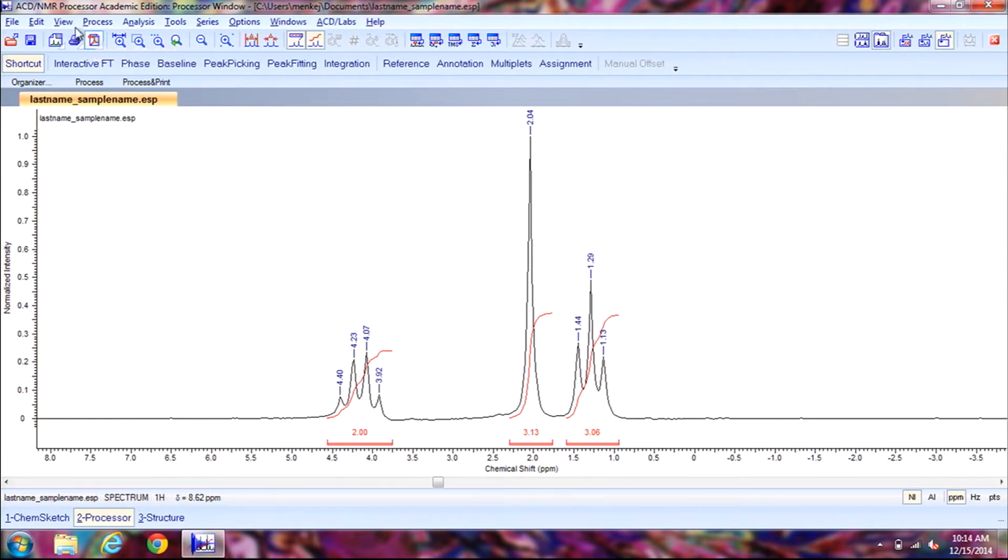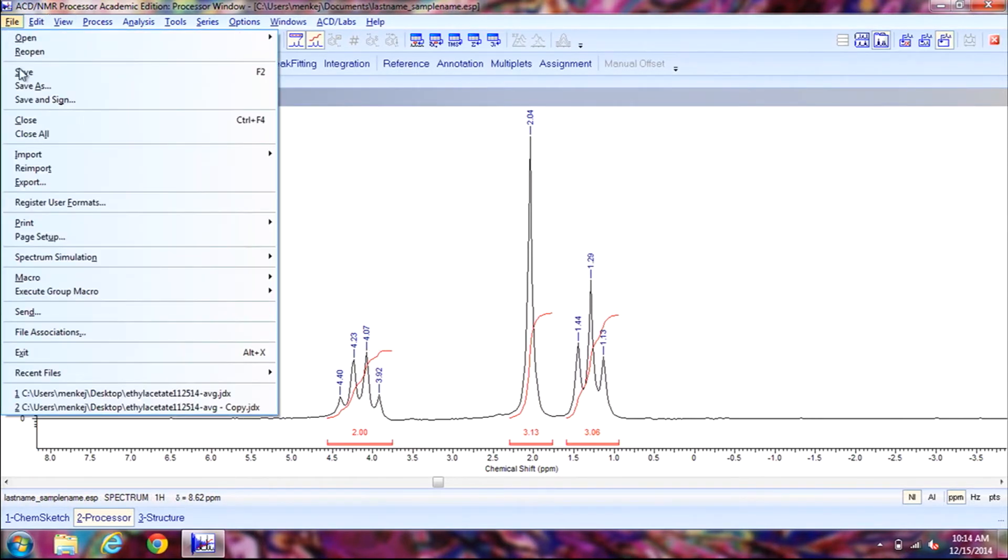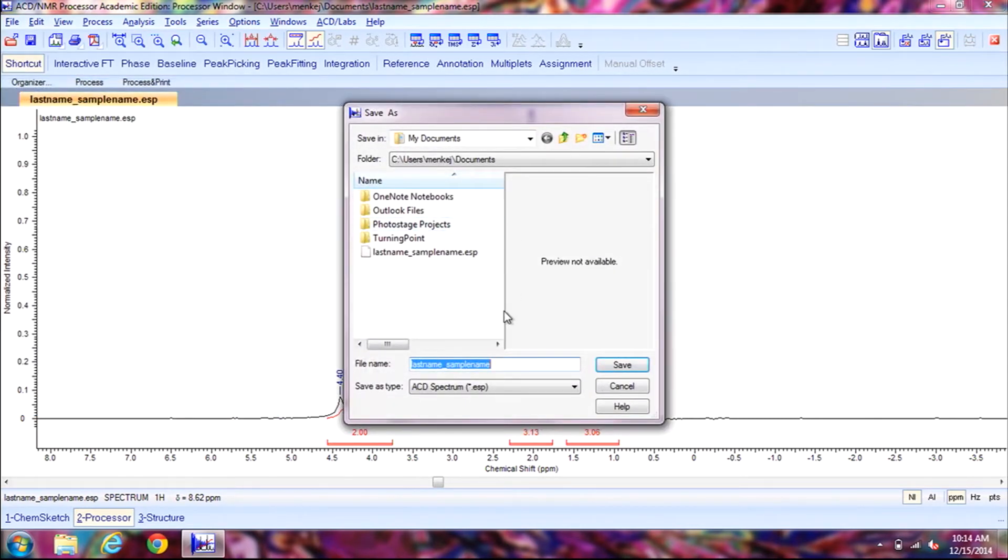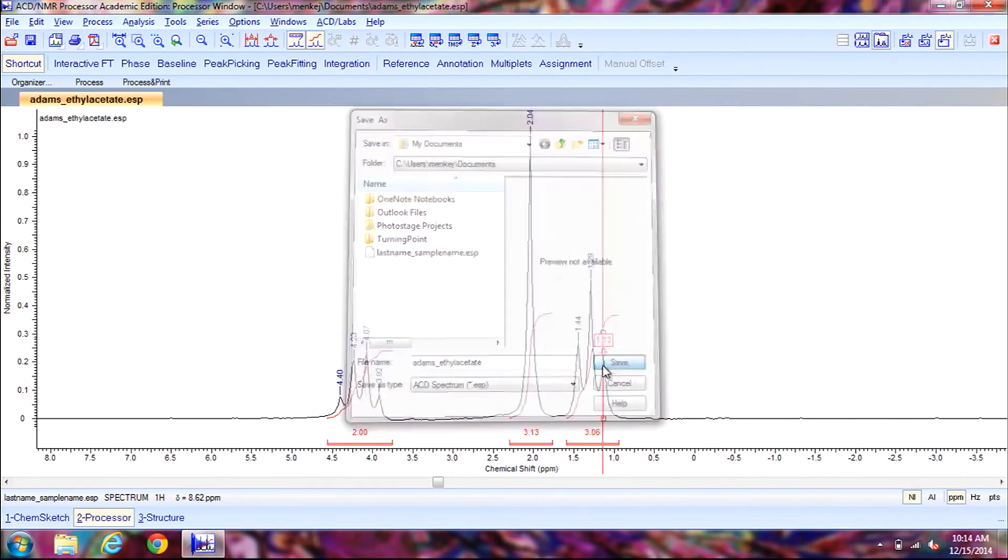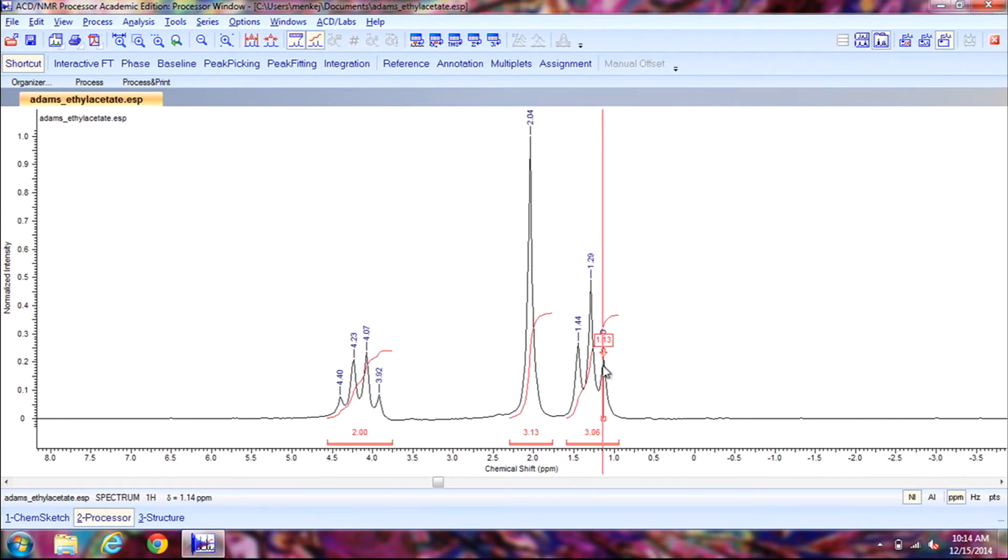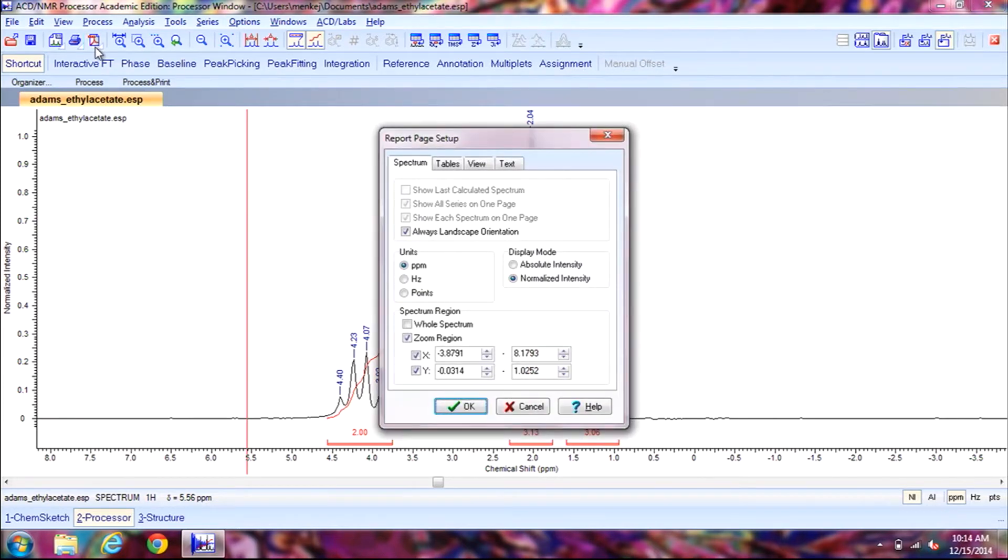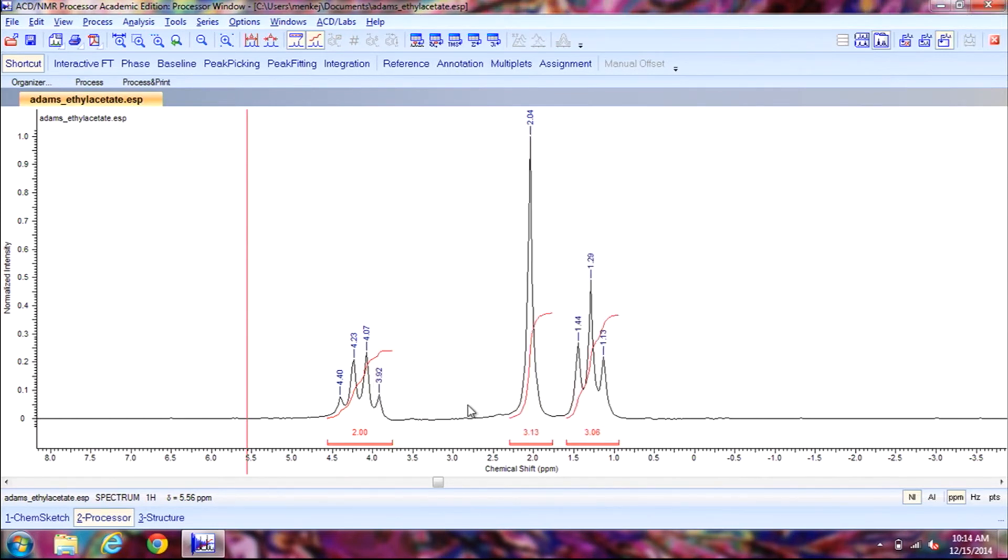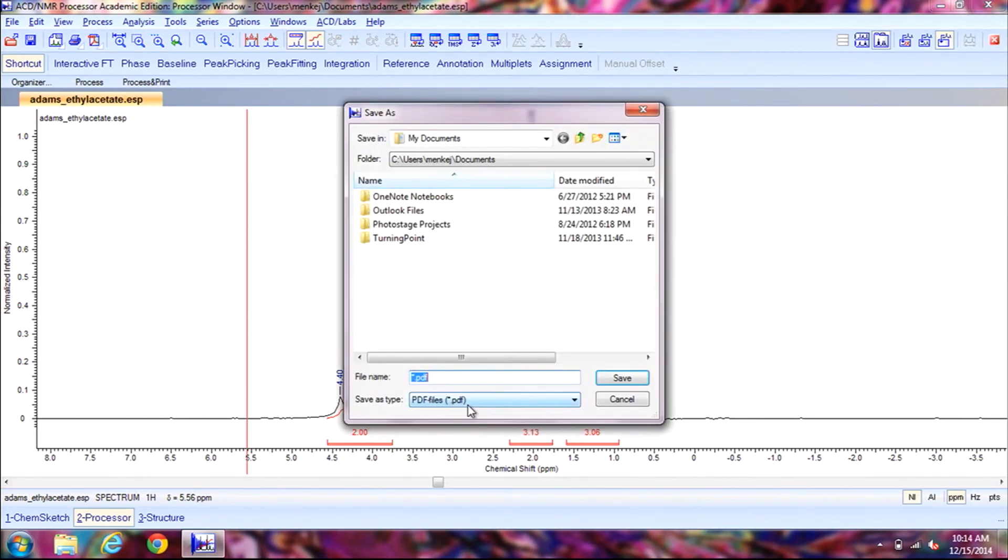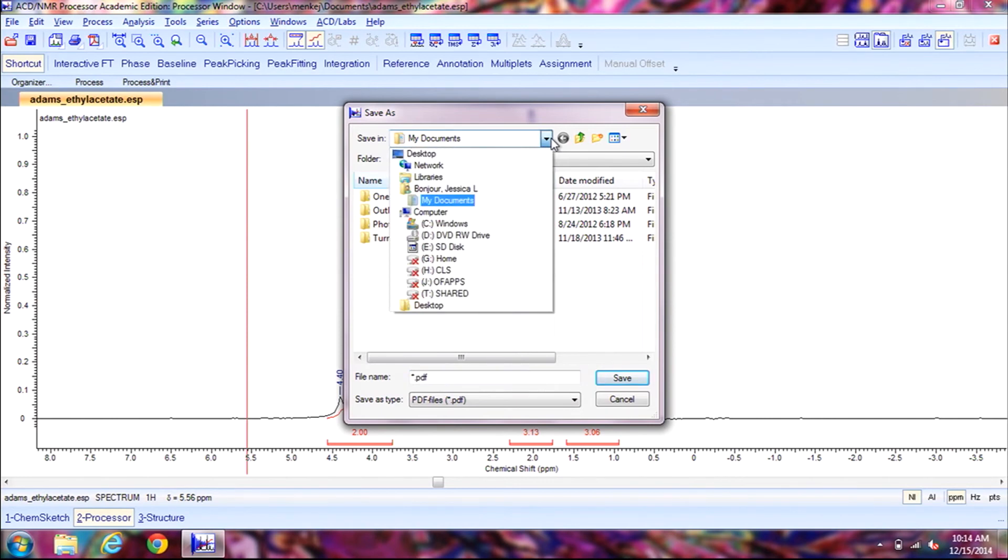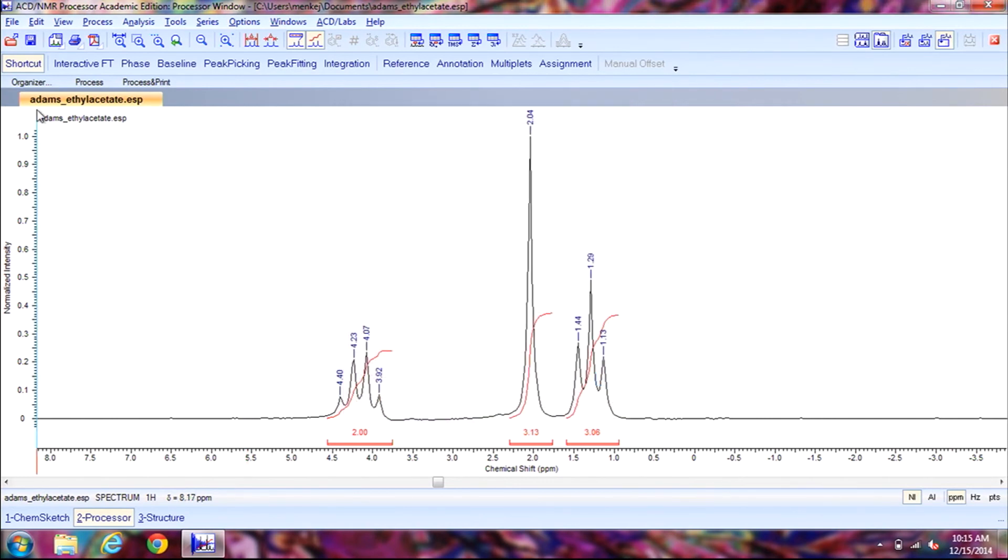Now to save our file we're going to go to file, save as. You want to label it as your last name and then your sample name and then click on save. You can also save it to a PDF file so that way you can print it later on. If you click on the PDF icon you can save it to a flash drive. Click on OK in the window that pops up, and then you can select here where your flash drive is to save it as. So this is how to analyze your spectrum using the ACD NMR processor.